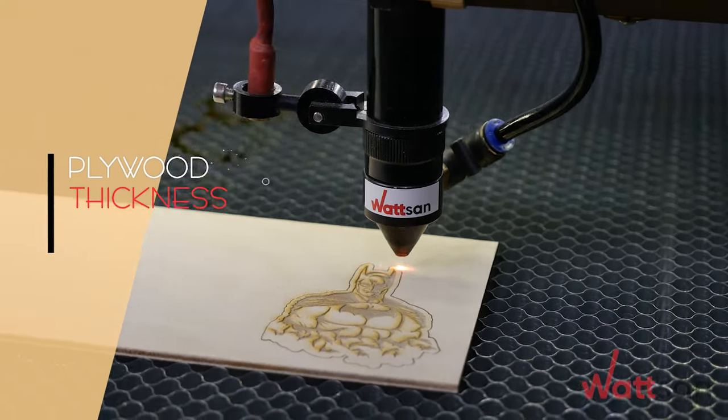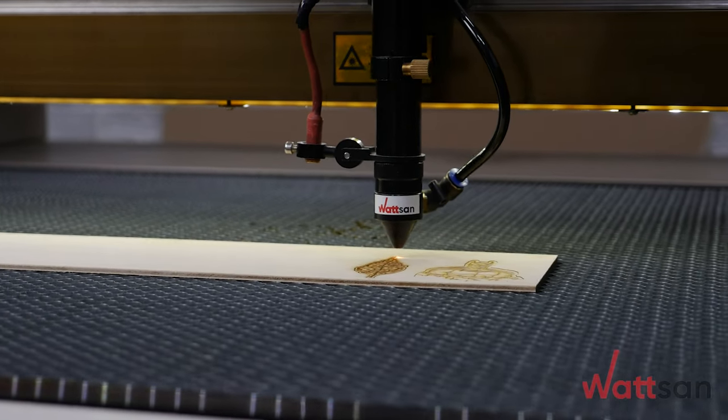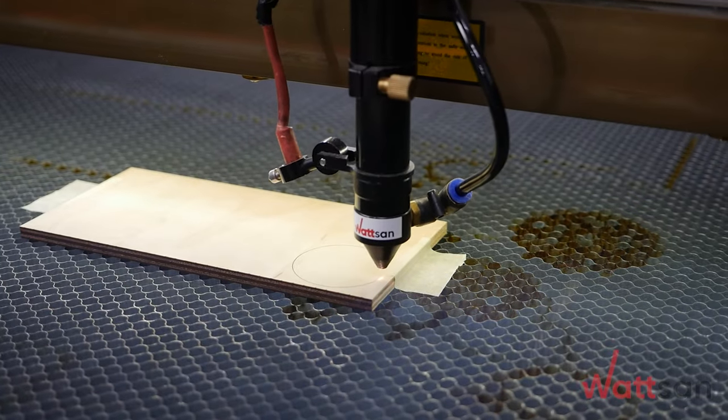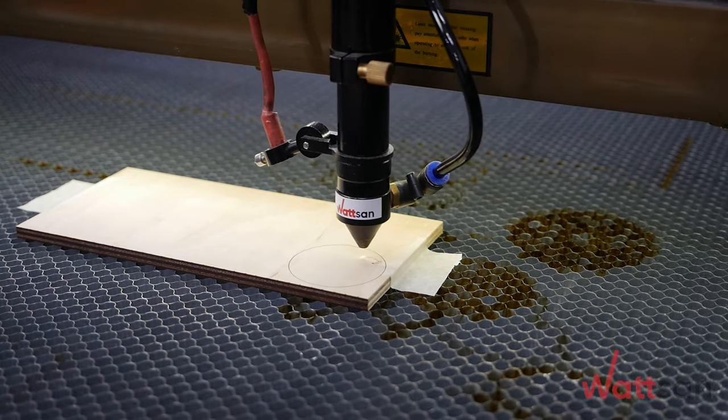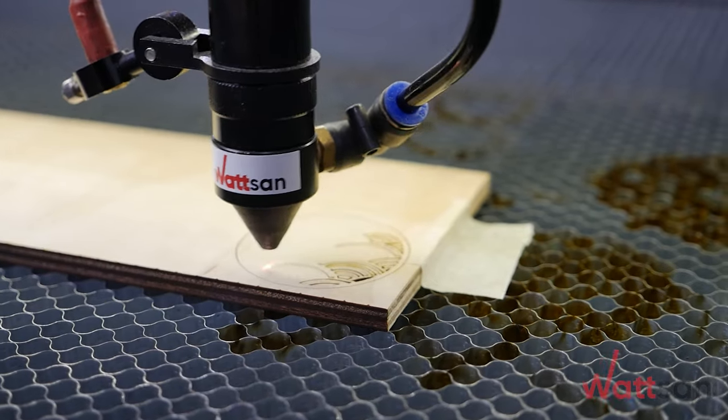2. Plywood thickness. Plywood up to 6mm thick is the most suitable for laser cutting. When cutting plywood up to 8-10mm thick, there is fouling at the product edges, and the speed of operation is quite low.